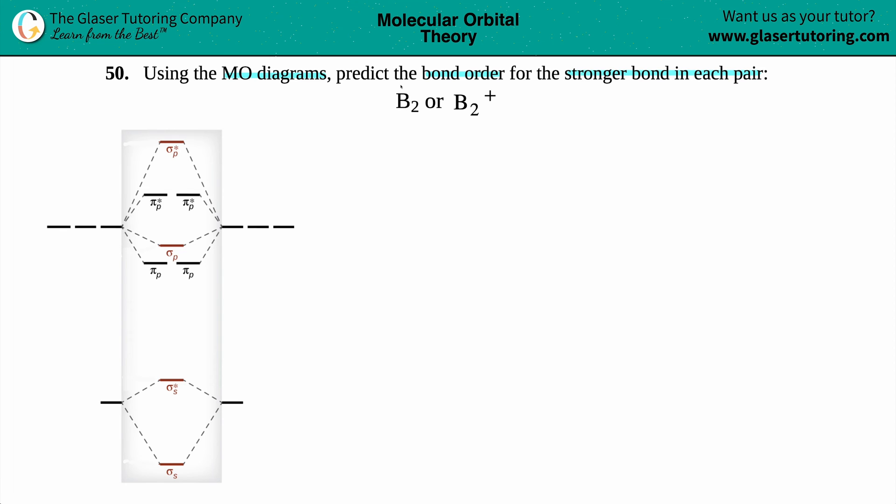Over here I have the correct molecular orbital diagram for boron. Boron has sp mixing, which is why this arrangement of s and p orbitals looks a little messed up. Boron is in group three, which means it has three valence electrons - that's going to be important when we do our diagram. The atomic orbitals are on the sides and your molecular orbital is in the middle.